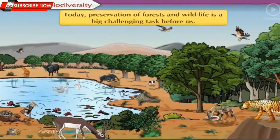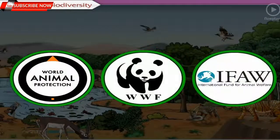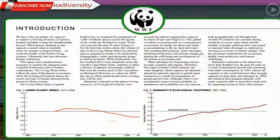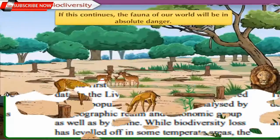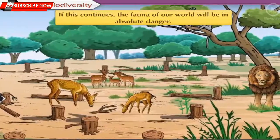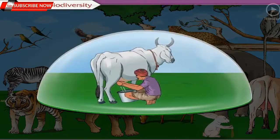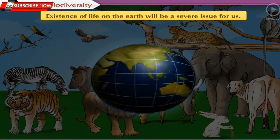Preservation of forests and wildlife is a big challenging task. World Wildlife Fund (WWF) published a report in 2008 stating that since 1970 to 2005 — about 35 years — approximately 30% of wildlife species have become extinct around the world. If this continues, the fauna of our world will be in absolute danger, and gradually the existence of life on earth will be a severe issue.